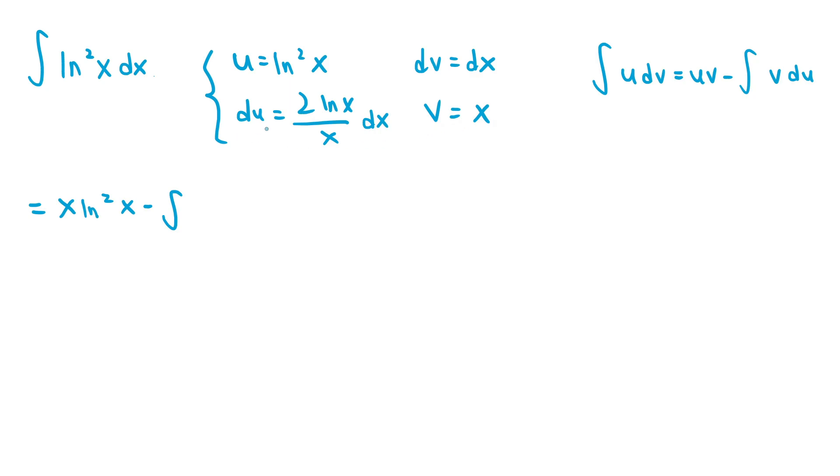v equals x and du equals 2 ln x over x dx. So the x and the x in the denominator cancel out. So this is just 2 ln x dx.